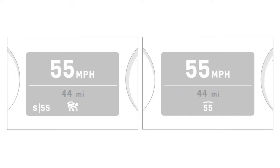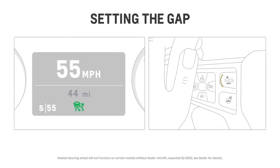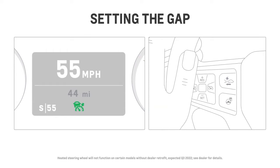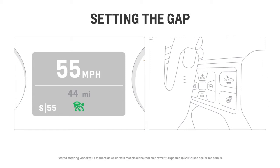The white Adaptive Cruise Control icon will change to green, which means the system is engaged, and in some vehicles the set speed will also change to green. Once engaged, press the Gap Setting button on the steering wheel to select a far, medium, or near following gap between your vehicle and the vehicle ahead.